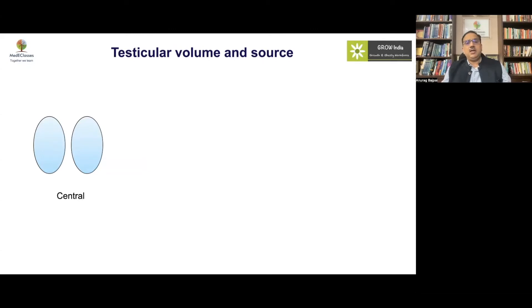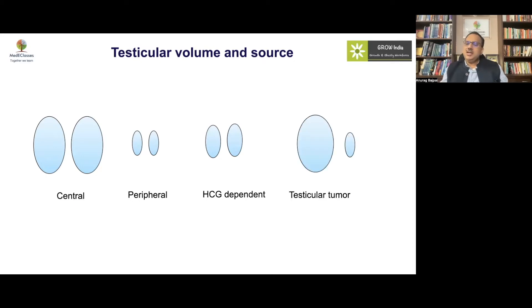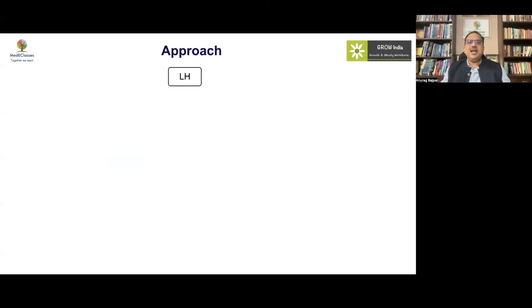If the testes are bilaterally enlarged, it suggests central precocious puberty. If they are very small, it suggests a peripheral form like congenital adrenal hyperplasia. If intermediate in size, it indicates Leydig cell hyperplasia suggesting an HCG-dependent cause. If there is unilateral enlargement, it may indicate a testicular tumor. Testicular volume is the key guide for further evaluation and workup, which begins with the LH level.